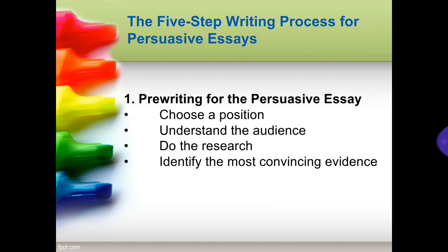Here are the five steps in the writing process for persuasive essays. Step one is pre-writing for the persuasive essay. What you're going to do is choose a position — are you against or are you pro? Then understand the audience, make some research, and identify the most convincing evidence.